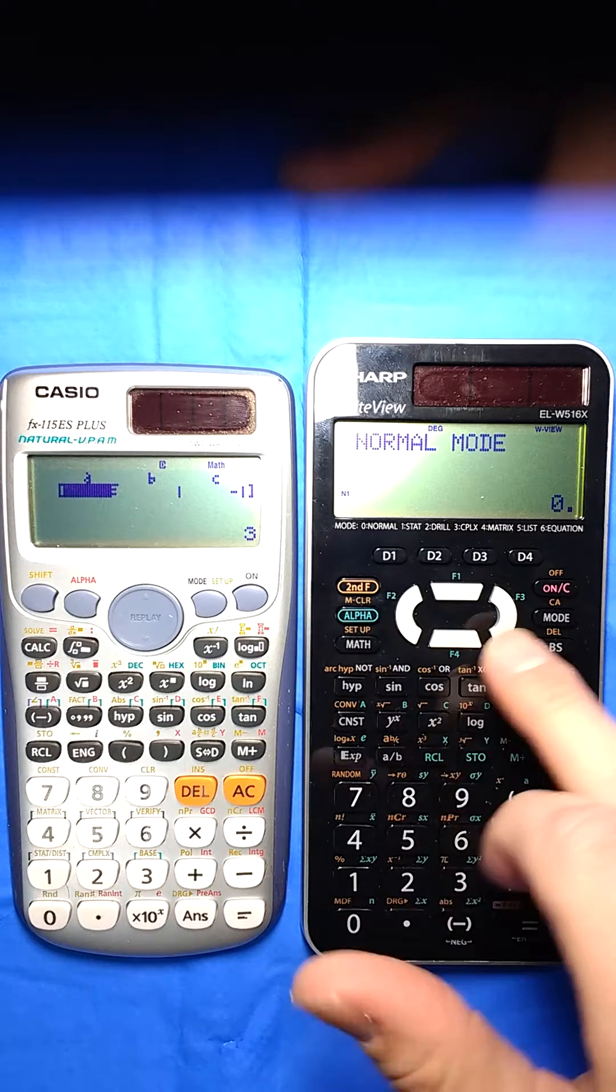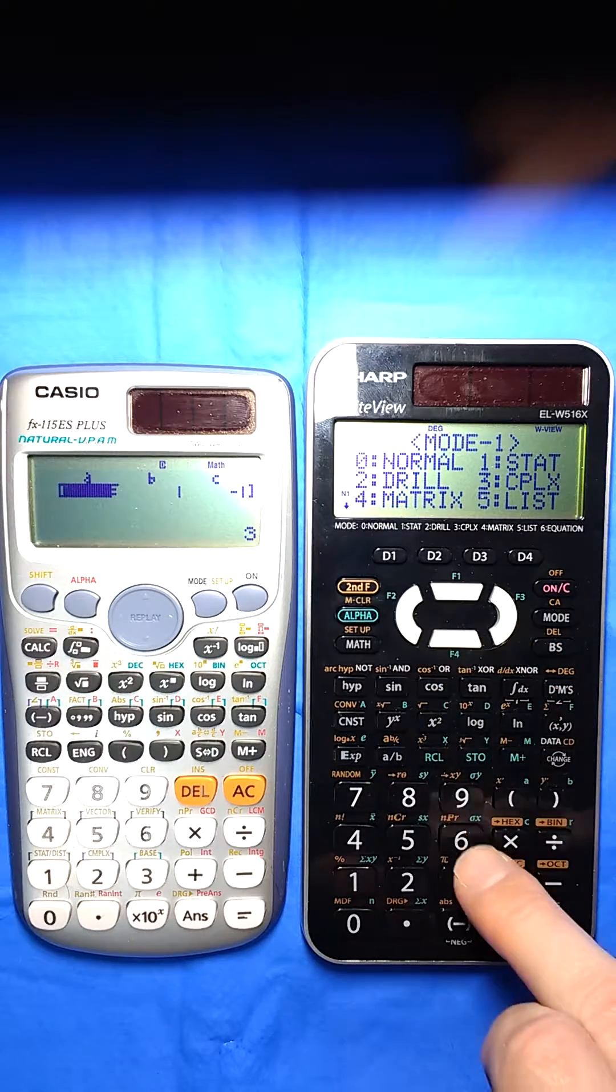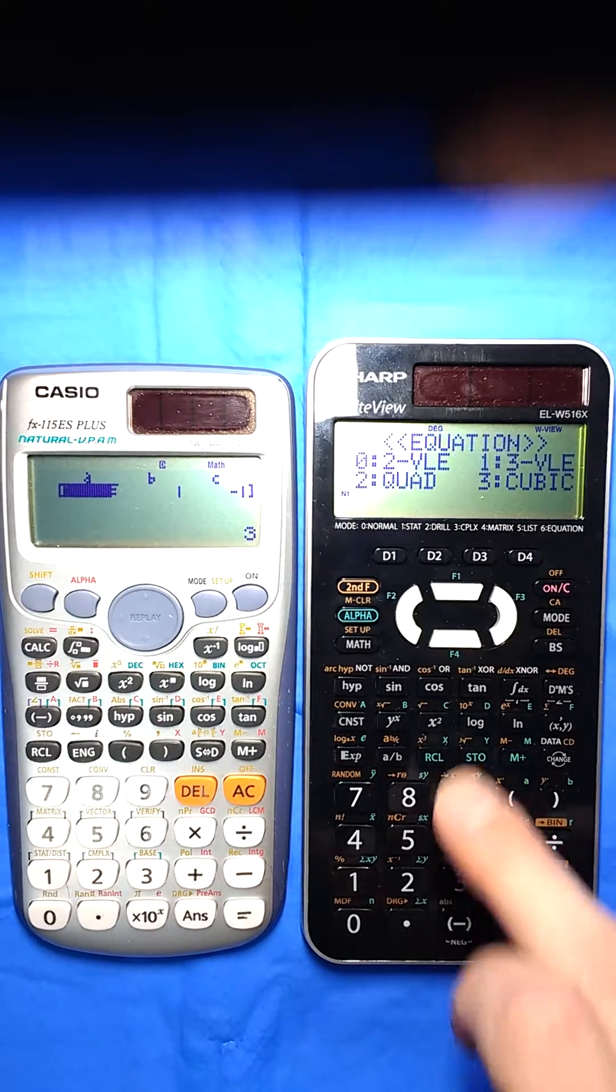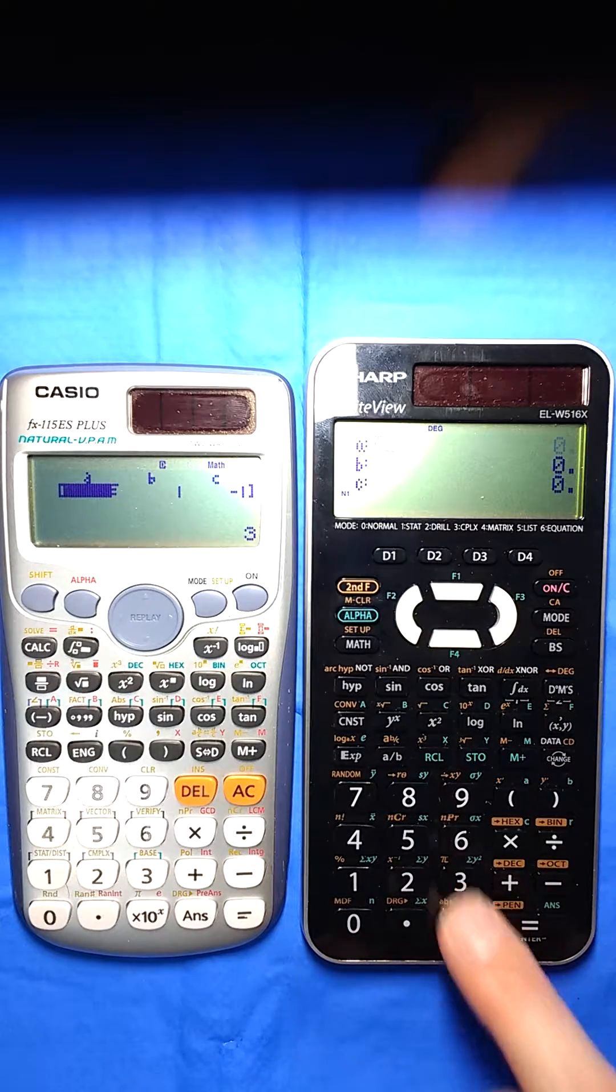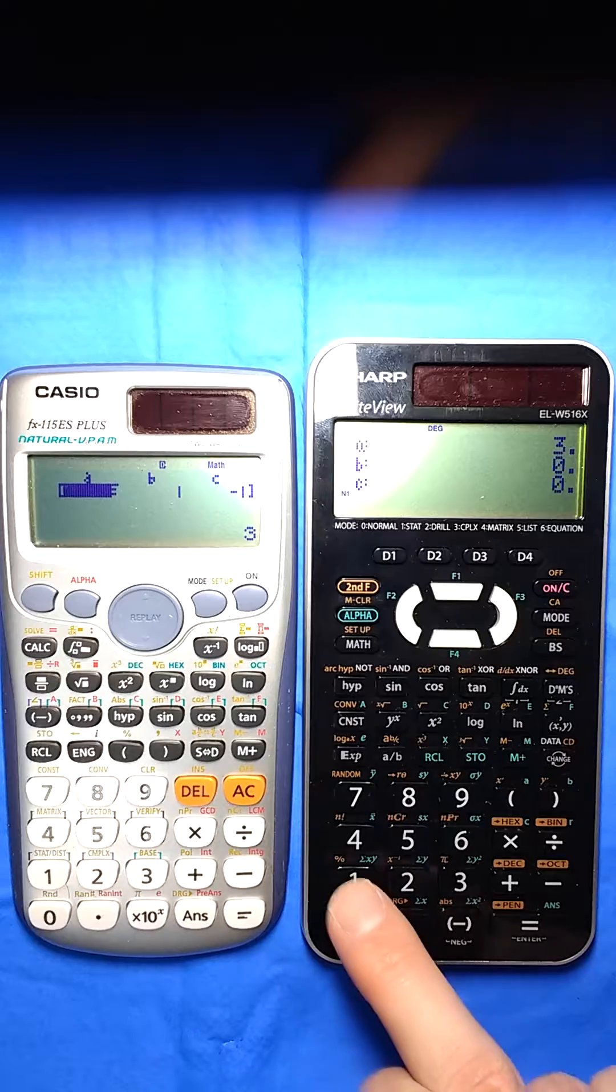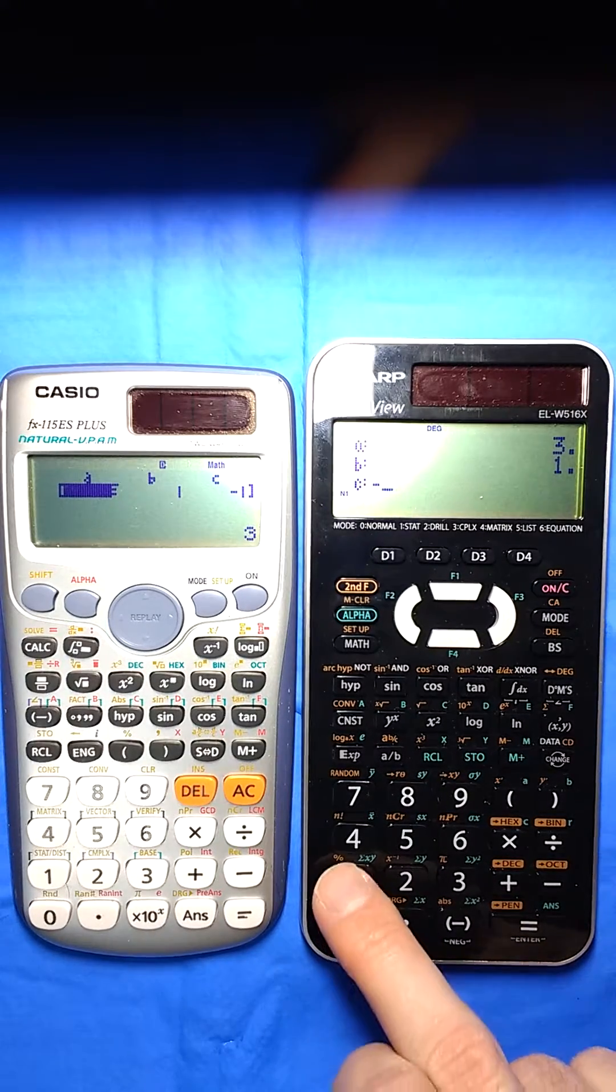Let's look at the Sharp here. I would go into also a different mode. Mode, I want to go into 6 as the equation. And I want to do a quadratic. Ask me for my coefficients. 3x squared plus 1x minus 1 for that.